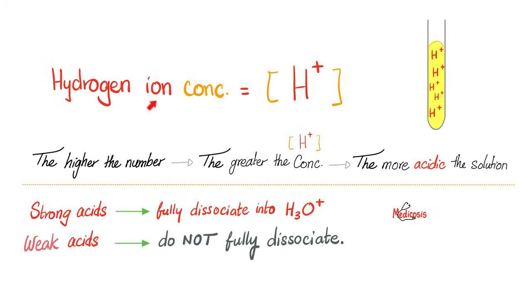If I want to denote hydrogen ion concentration, I will put hydrogen inside these kind of brackets. These are called square brackets. The higher the number, the greater the concentration of hydrogen ions and the more acidic the solution. Definition of strong acids, they are acids that fully dissociate in water into protons or hydronium ions. How about weak acid? They dissociate, but not fully. And usually the arrow will be going both ways. I go this, I also go this. But strong acid, only one way, full dissociation.